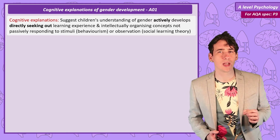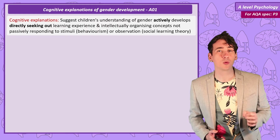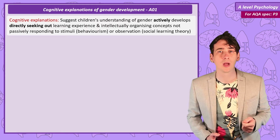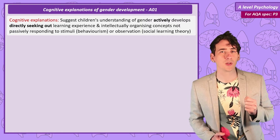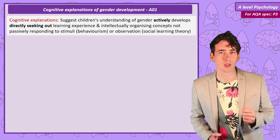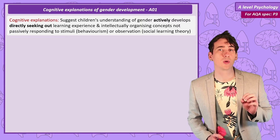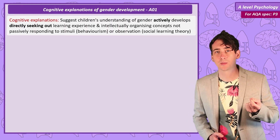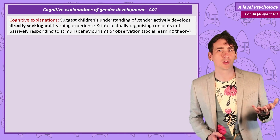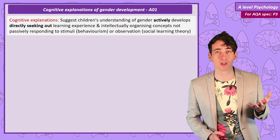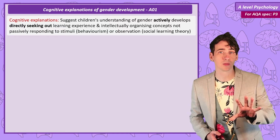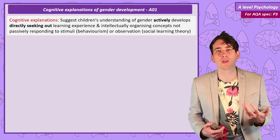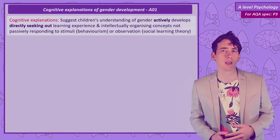Children's ideas on gender are influenced in this process by the experience they have had as they grow up, as well as their intellectual development as they mature. Using this definition, we would call cognitive theories active processes. A way to separate this from social learning theory is that the process of learning gender via observation is a more passive process of responding to external events or stimuli.